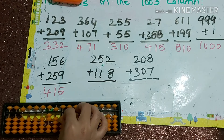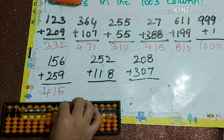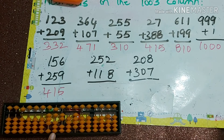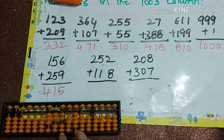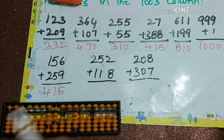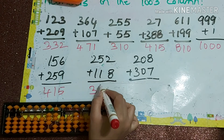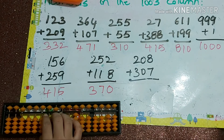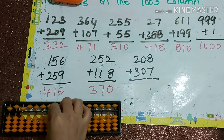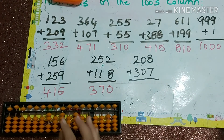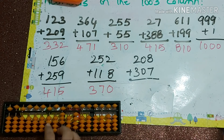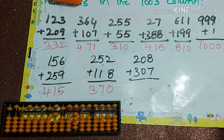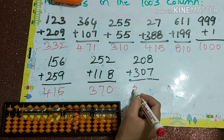Next: 252 plus 118. To add 18, we use plus 10 minus 2, so the answer is 370. Next: 208 plus 307 — plus 10 minus 3 — so the answer is 515.